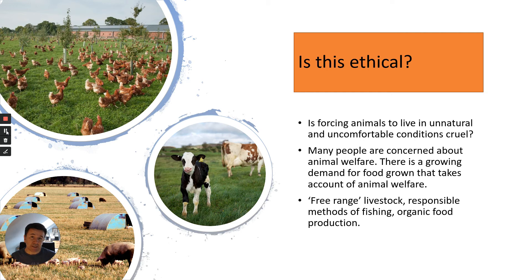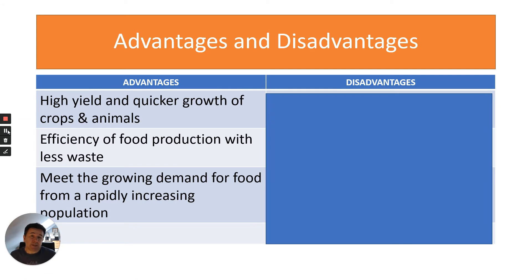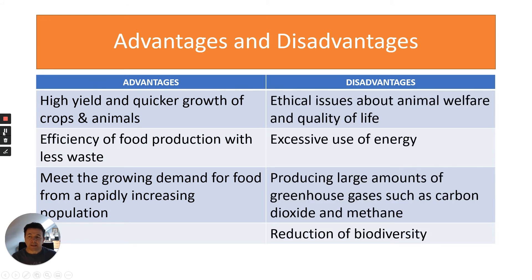We can evaluate intensive farming in terms of advantages and disadvantages. Advantages include: high yield and quicker growth of crops and animals; efficiency of food production meaning less energy is wasted; and meeting the growing demand for food from a rapidly increasing population.